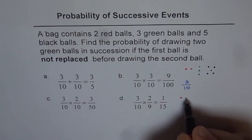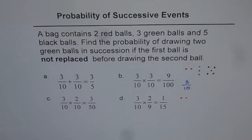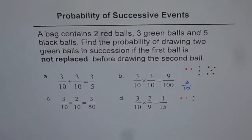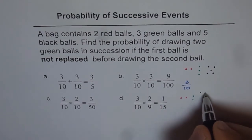The scenario is that we are left with two red balls, two green balls since we have already drawn one, and five black.